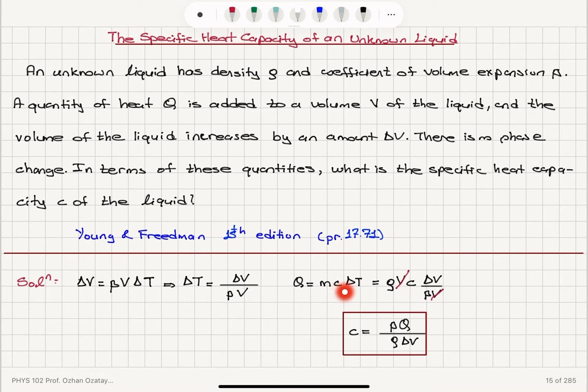So the specific heat capacity C is the amount of heat added per kilogram per kelvin. So it's joules per kilogram kelvin, for example, could be the unit. So ρ times V is the mass multiplied by C. ΔT is ΔV over βV. So the volumes will cancel. We will be left with ρCΔV over β equals Q. So we're going to pull out C here. β times Q divided by ρ times ΔV will be our final answer.